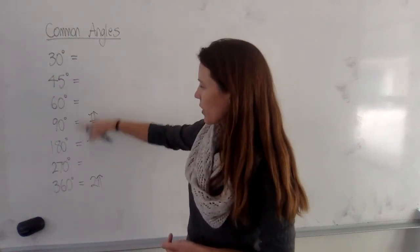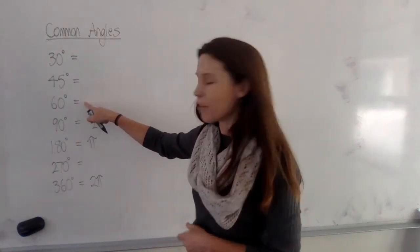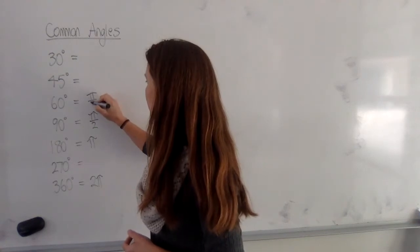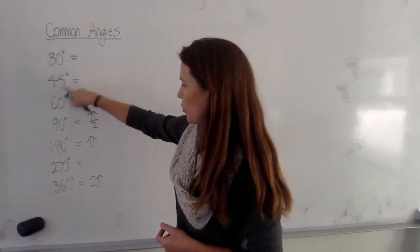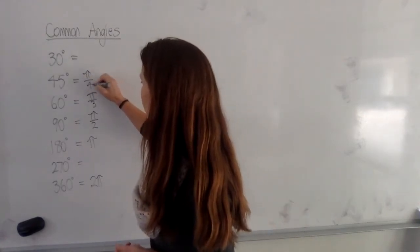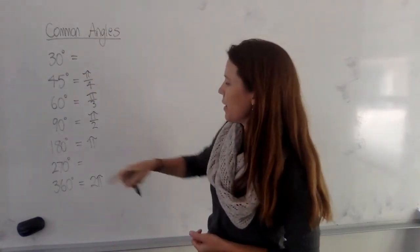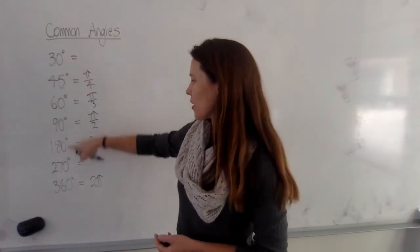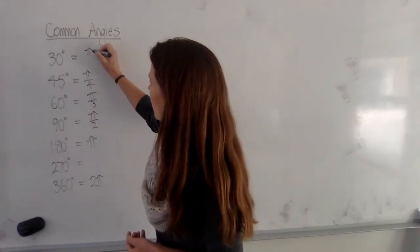If you have 60 degrees, that's going to be one third of pi, or pi over 3. 45 degrees, well, 4 45s is 180, so this is pi on 4, or a quarter of a pi. And 6 lots of 30 degrees is 180, so this one is pi on 6.